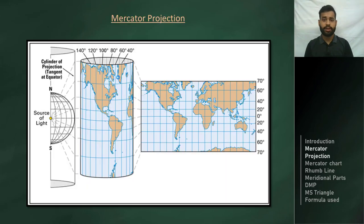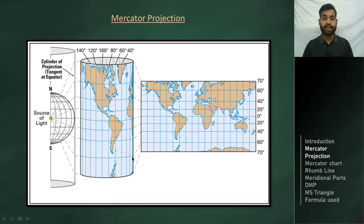What is Mercator projection? What are Mercator charts? For the purpose of navigation, we need a flat, two-dimensional chart which can represent the three-dimensional structure of the earth, which is actually curved. Mr. Mercator solved this problem. He took a transparent globe with latitudes and longitudes drawn on it, and then wrapped this transparent globe with a cylindrical sheet, as you can see here.